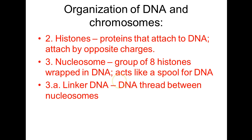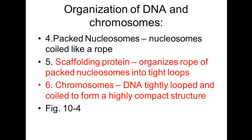The next level is called packed nucleosomes, where these nucleosomes link and attach to one another, pulling in very tight and coiling up like a rope. Then we have the scaffolding protein, which organizes this rope of packed nucleosomes into very tight loops. Finally, we get to the chromosome structure itself — DNA that is tightly looped and coiled to form a very compact structure.